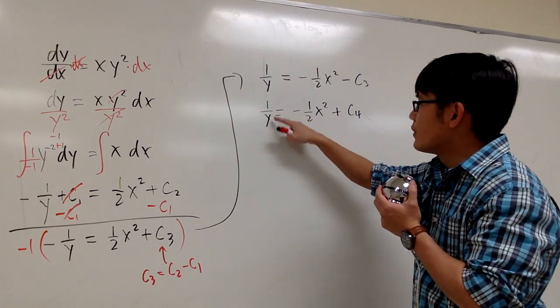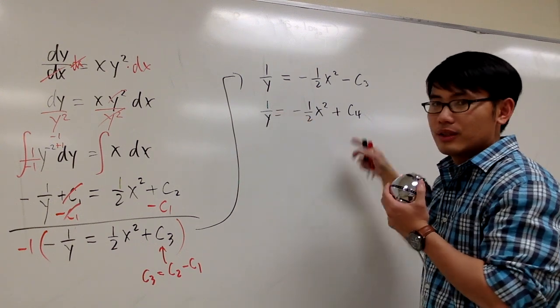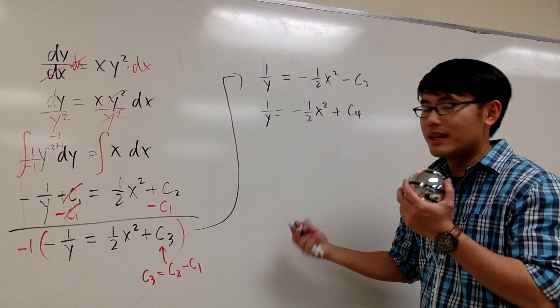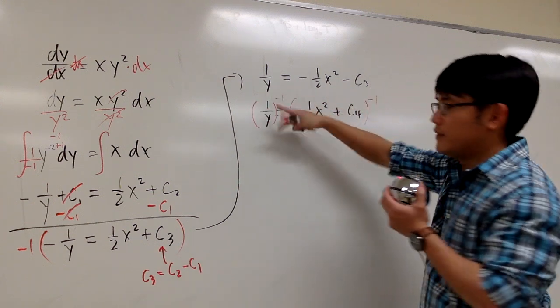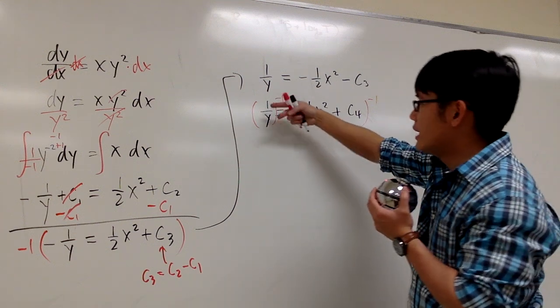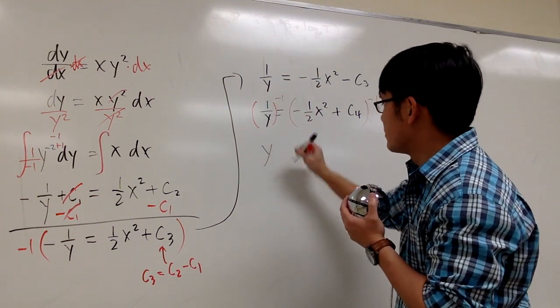Well, this is 1 over y is equal to this. So what do we do to isolate y? I technically will have to raise both sides to the negative 1 power. So I can flip that, right? So on the left-hand side, we get y. Finally, it's by itself.